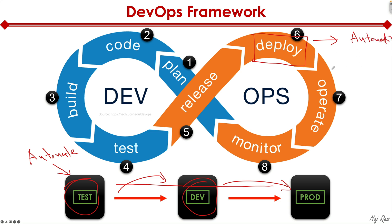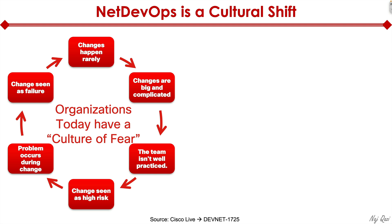This is where the automation tools or the network configuration tools come into play — things like Ansible, Chef, and Puppet live right here. But before we get into that, I think it's important to take a step back and look at how we got here and what led to the whole DevOps mindset.